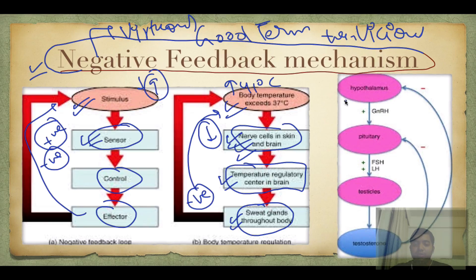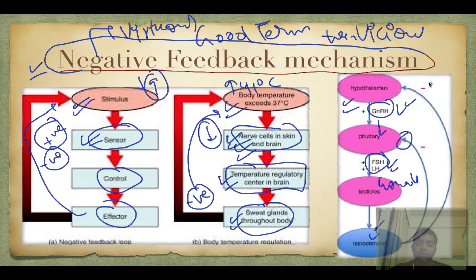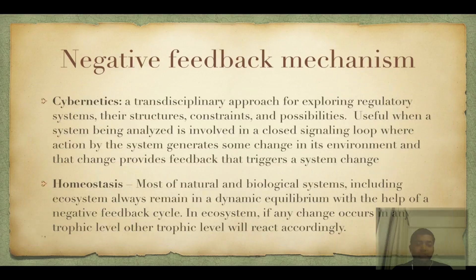Similarly, the hypothalamus releases gonadotropin-releasing hormone (GnRH) which affects the pituitary. The pituitary releases FSH and LH, which act on gonads releasing testosterone or estrogen in males and females respectively. This gives negative feedback to the pituitary, which stops releasing FSH and LH, and also gives negative feedback to the hypothalamus, which stops releasing GnRH. This is how negative feedback works.